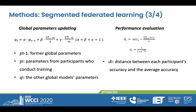Here are some equations we adopted to decide the aggregating and the performance evaluation for structure transformation. Based on the former global parameters, the parameters from the participants who conducted the training, as well as the other global models' parameters, we updated the global parameters every epoch. For the evaluation, we evaluated the divergences between the accuracies of all the participants.